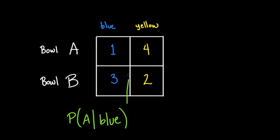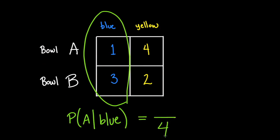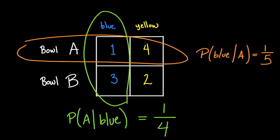Going back to the table, because we are dealing with the condition that the marble is blue, the sample space is restricted to the four blue marbles. Of these four blue marbles, one is in bowl A and each is equally likely to be drawn. Thus, the conditional probability is one out of four. Notice that the probability of picking a blue marble given that the marble came from bowl A is not equal to the probability that the marble came from bowl A given that the marble was blue. Each has a different condition, so be careful not to mix them up.